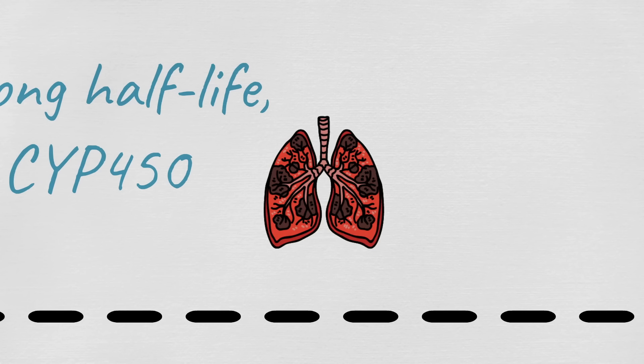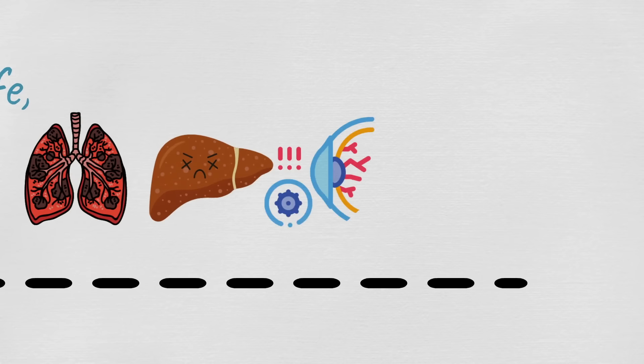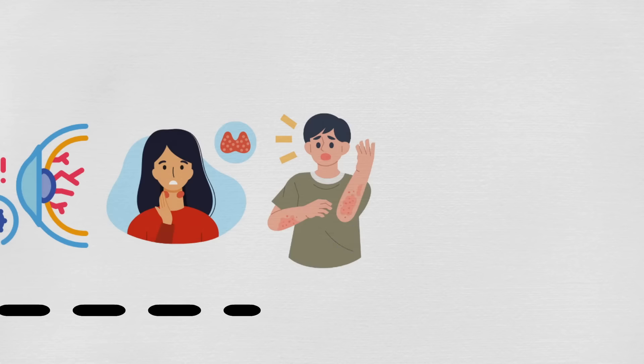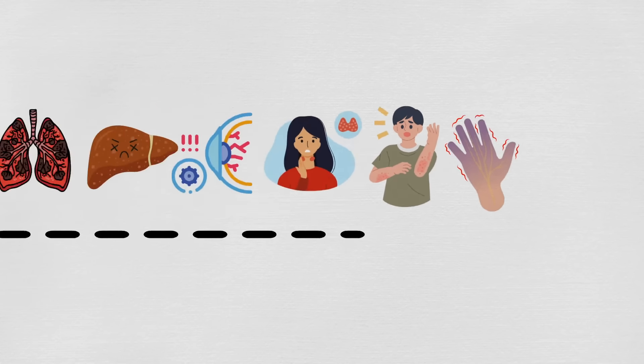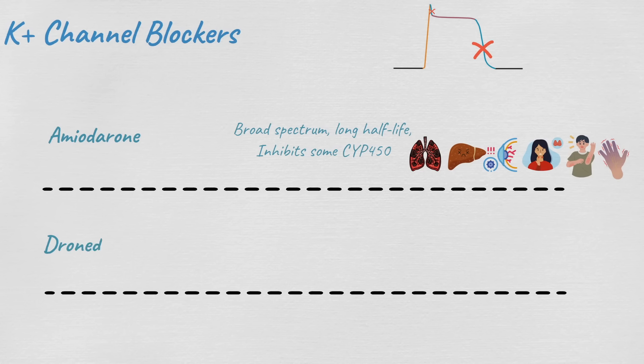Side effects include pulmonary fibrosis, hepatotoxicity, optic neuropathy, hyper and hypothyroidism, photosensitivity, and peripheral neuropathy. Second, we have dronedarone, which is a derivative of amiodarone but has a better side effect profile and shorter half-life. Dronedarone does not contain iodine, so it has little effect on thyroid function. Side effects may include QT prolongation and increase in serum creatinine.